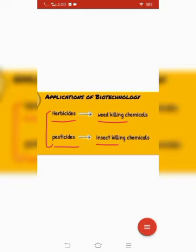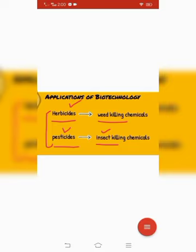Herbicides اور pesticides وہ chemicals ہیں جو پودوں پر موجود جڑی بوٹیاں اور کیڑے مکوڑوں کو مارنے کے لئے استعمال کیے جاتے ہیں۔ جڑی بوٹیوں کو مارنے والے chemicals کو herbicides کہتے ہیں جبکہ کیڑے مکوڑوں کو مارنے والے chemicals کو pesticides کہتے ہیں۔ لیکن ان کے استعمال کا نقصان یہ تھا کہ یہ chemicals پودوں کو بھی خراب کرتے تھے۔